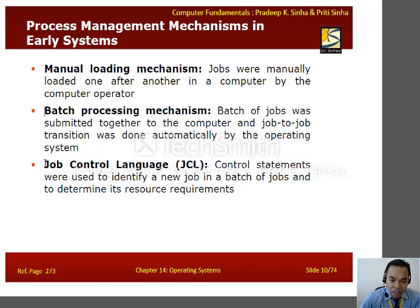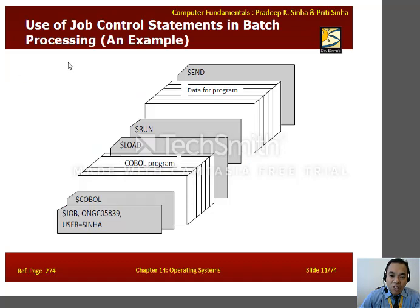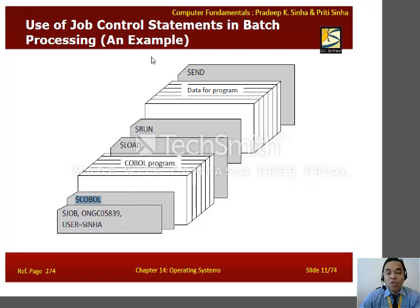The system evolved further into job control language, where control statements were used to identify a new job in a batch of jobs and to determine its resource requirements. An example of a job control statement in batch processing is the programming language COBOL — Common Business Oriented Language — where a set of job statements would be loaded and instructions executed by batch processing.